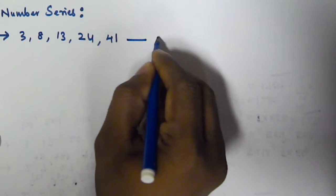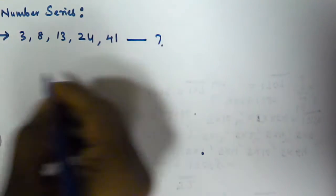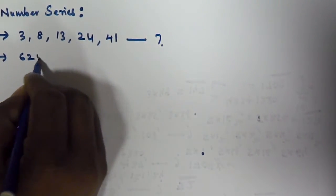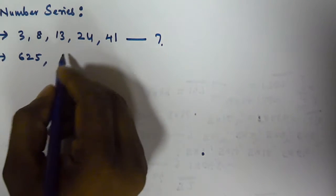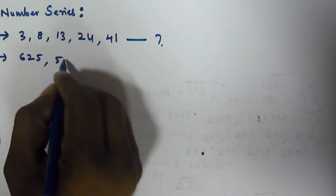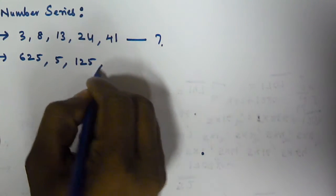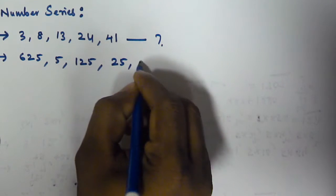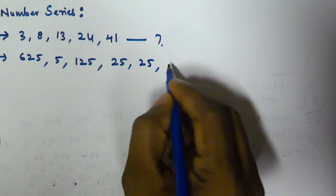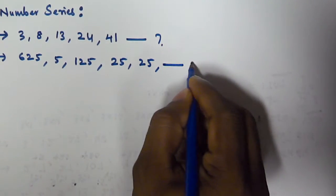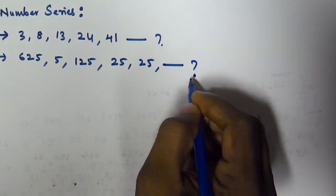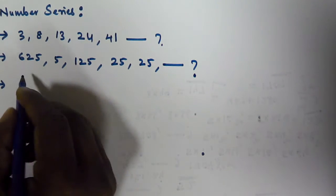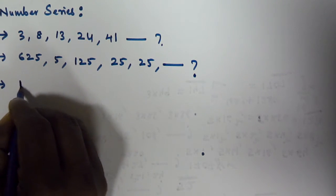The second problem is: 625, 5, 125, 25, 25. What number comes next?